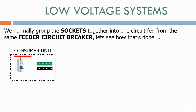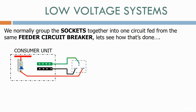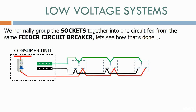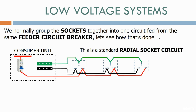Here's our consumer unit with a live bus bar, a feeder circuit breaker, a ground terminal strip and a neutral terminal strip. We have a live connection from the feeder circuit breaker onto the socket, a connection from the ground terminal strip, and from the neutral terminal strip to the socket. Here we have another socket connected in parallel to the original socket. All we need to do is loop the ground wires across, the live wires across and the neutral wires across. We can keep on adding as many sockets as we need. This is a standard radial socket circuit.